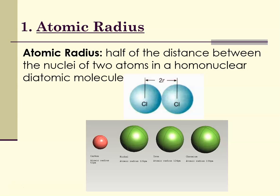For comparison, carbon is 62 picometers, and nickel, iron, and chromium are all very close between 124 and 130 picometers.